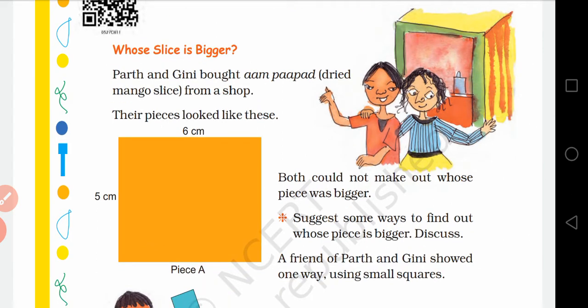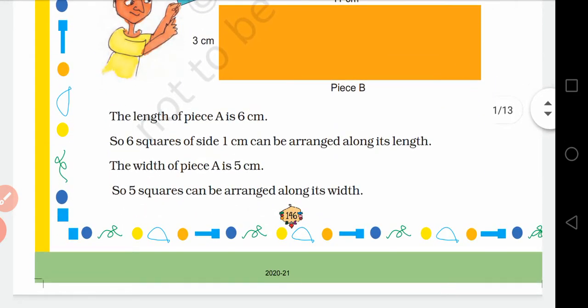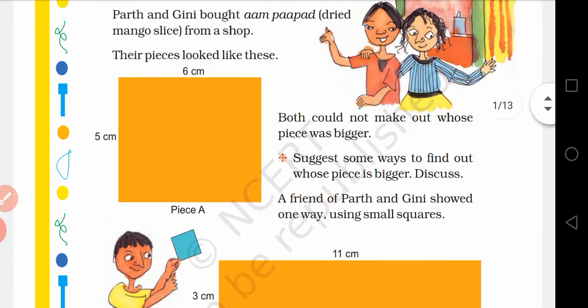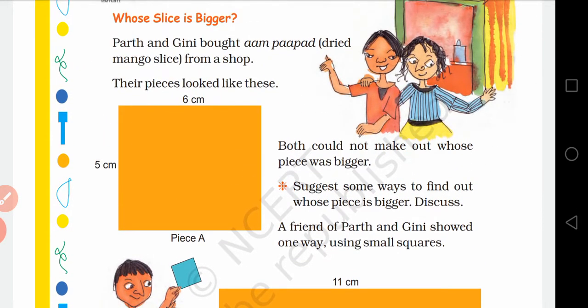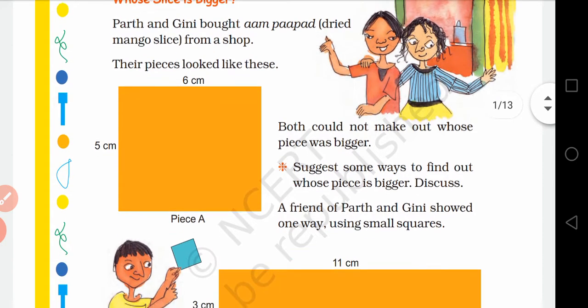Whose slice is bigger? The first part is whose slice is bigger. So Perth and Ginni bought aam papad from a shop. So there are two children, Perth and Ginni, they bought aam papad from a shop. And the shape of the aam papads are given on page number 146. The first one is square shaped and the second one is rectangular shaped. The square shaped aam papad is for Perth and the rectangular shaped aam papad is for Ginni.